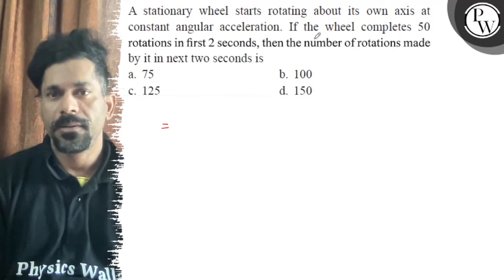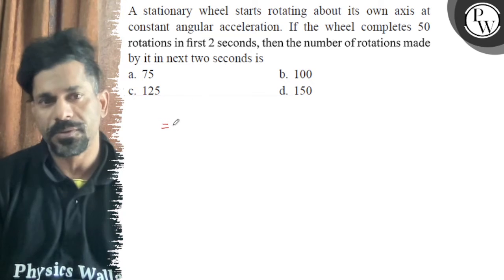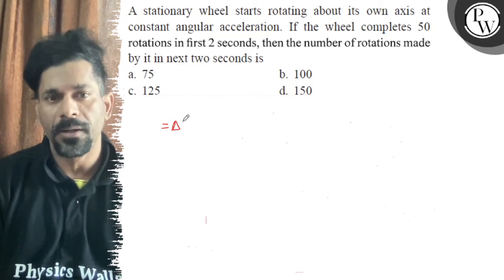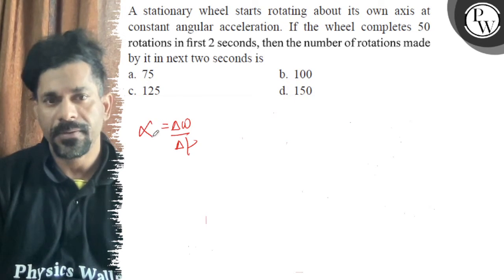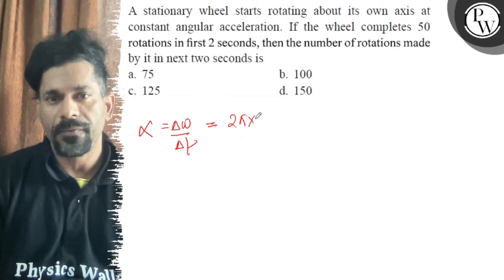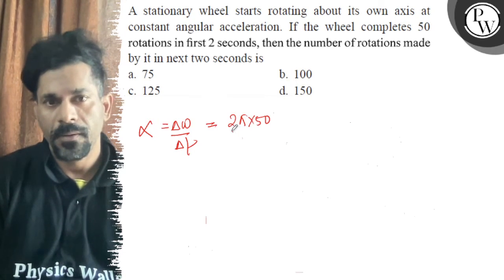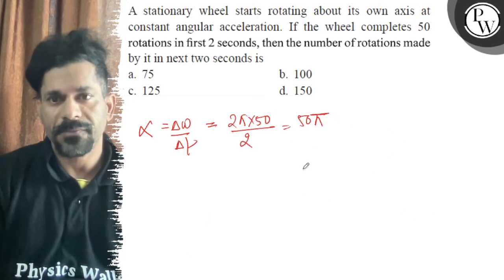So if you can see, the wheel completes 50 rotations in 2 seconds. Change in omega divided by delta t is your alpha. How much is it? 2π into 50 by 2 — so that is 50π. So alpha is 50π.